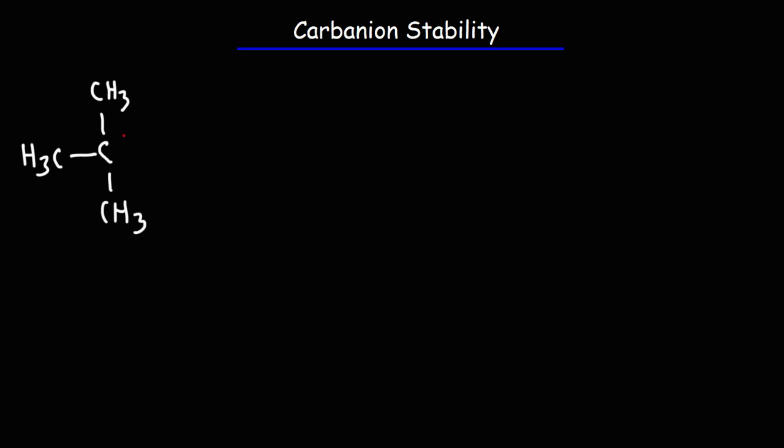Here we have a tertiary carbocation. The reason why it's tertiary is because the carbocation, that is the carbon with the positive charge, is attached to three other carbon atoms. This carbon here is a secondary carbocation because, as you can see, it's attached to two other carbon atoms.